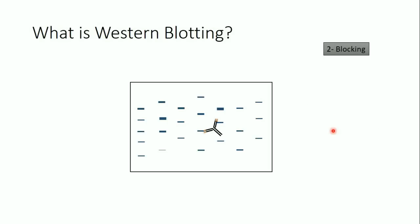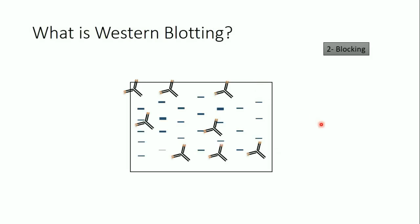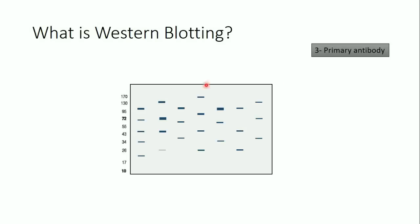The second step is blocking. If I apply the antibodies directly to the membrane, the antibodies will bind everywhere on the membrane because this membrane has a high affinity to proteins. So I need to block the membrane first. What we use to block the membrane is fat-free milk, because the milk can bind everywhere on the membrane but not on the proteins. After blocking, the membrane is fully blocked.